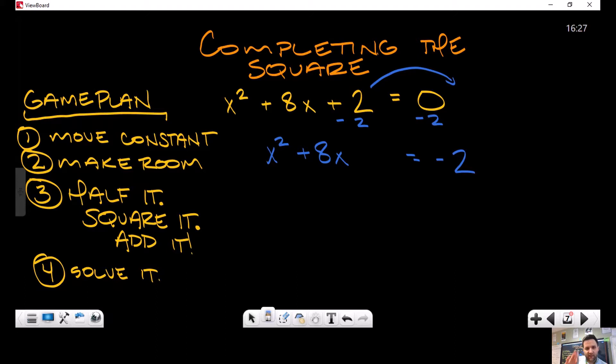Now you'll note that I have left space here. That's because my next part of the game plan is to make room. I'm going to simply allocate some space in the problem. My next part of my game plan is half it, square it, add it. The 'it' in question is b - that is what I'm referencing here.